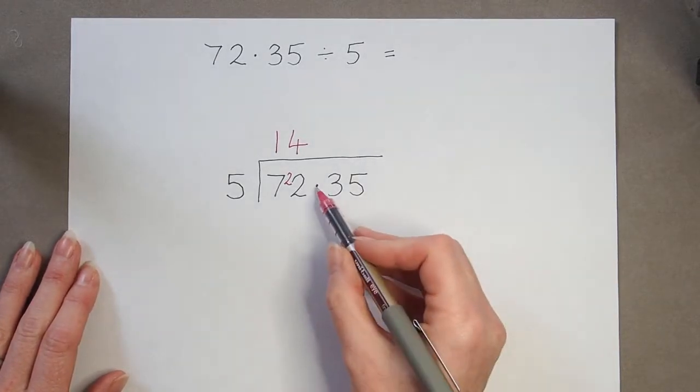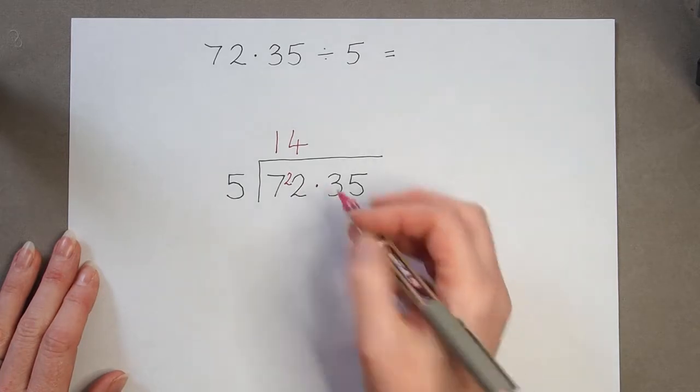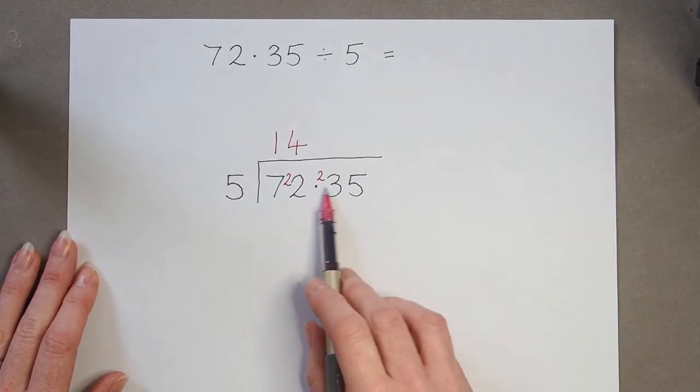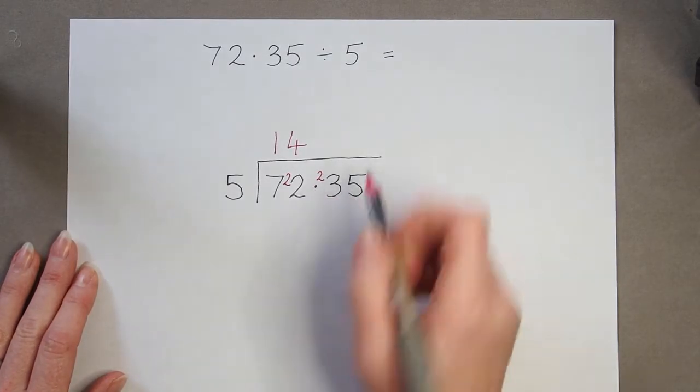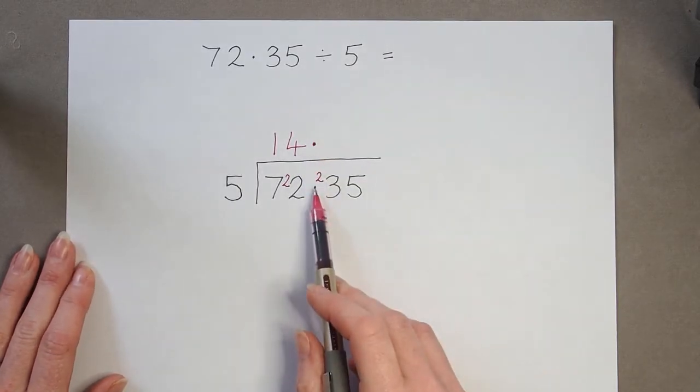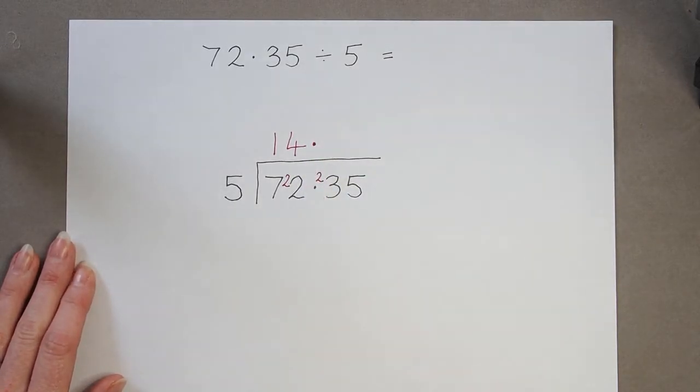Now, what I need to do is just as I would normally put that remainder of two in front of the next digit. But we can see now we're in the decimal places. So in my answer, I'm also now going to write that decimal point in because it's important I don't forget that decimal point.